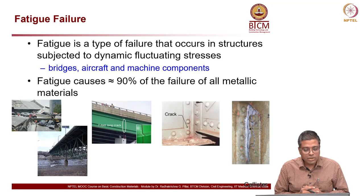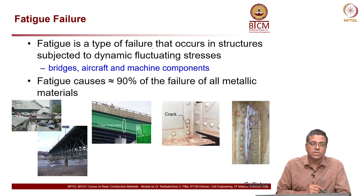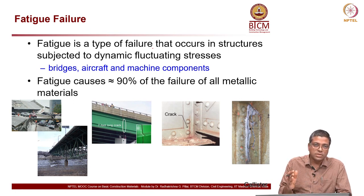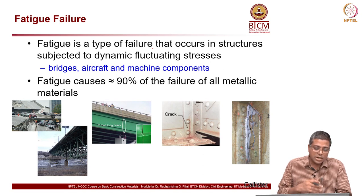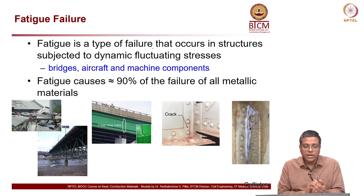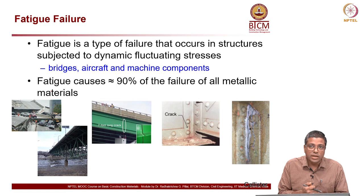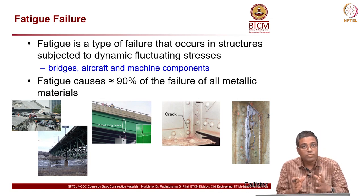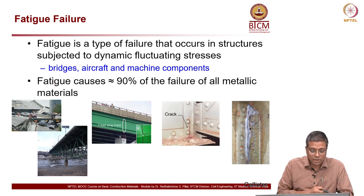Another phenomenon is fatigue failure. Fatigue is a type of failure that occurs in structures subjected to dynamic fluctuating stresses, where the stress might change from tension to compression and back. These kinds of fluctuations lead to the failure phenomenon called fatigue failure. This is widely observed in metal structures — about 90% of the failure of metallic materials is due to fatigue, making it a very important phenomenon in metal structures.